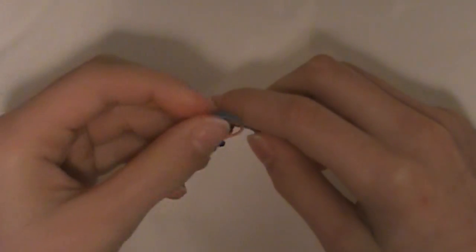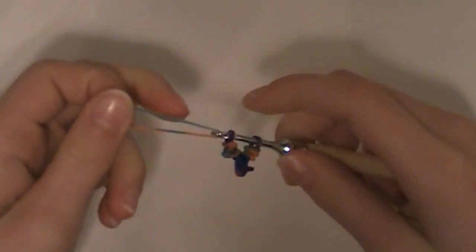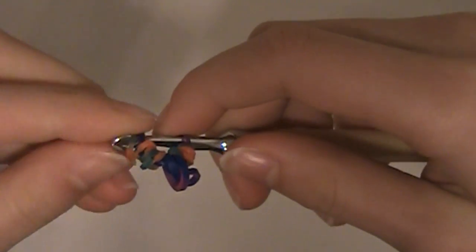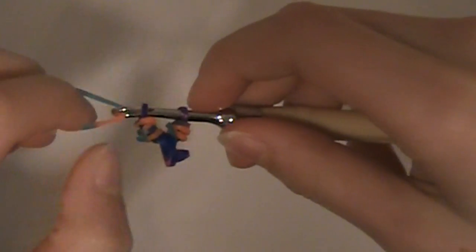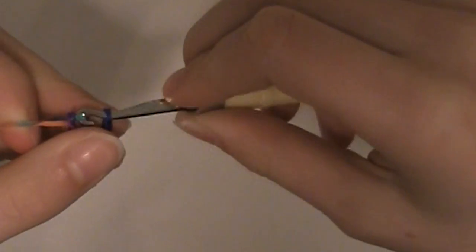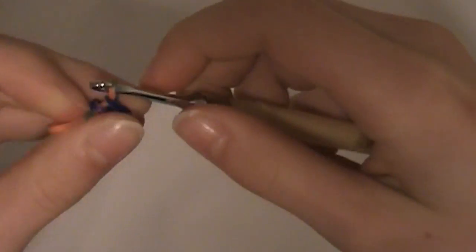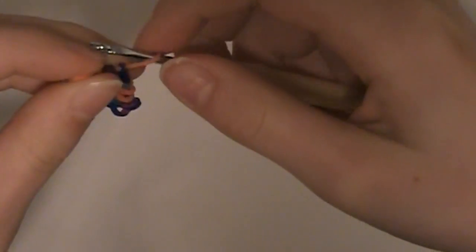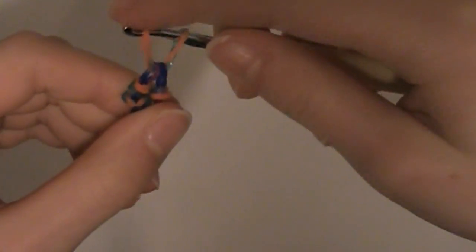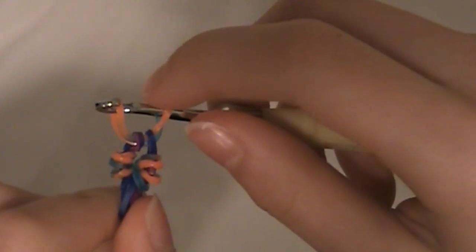I'm going to take my next color, and it's this orange, and put it on the end like this. And we're going to pull both sides of this band onto the orange band. And put the other side of the orange band onto the hook, like so. So now your thing looks like this.